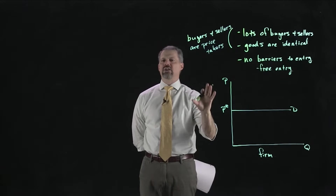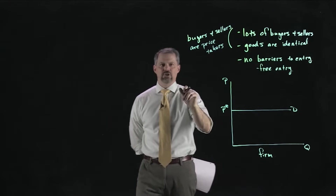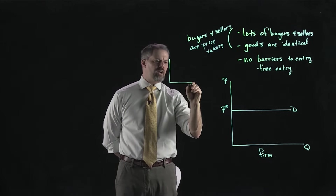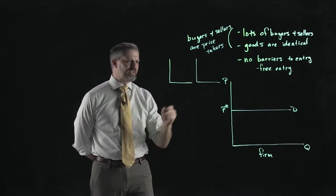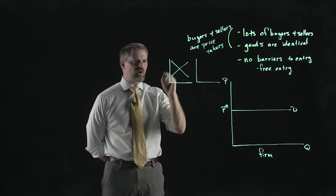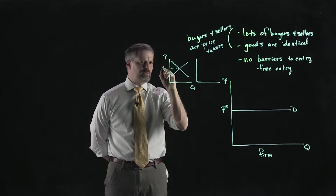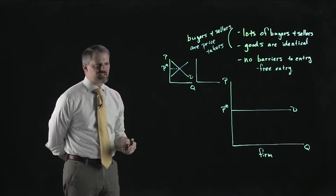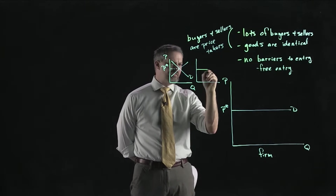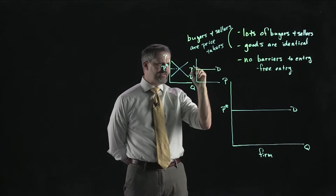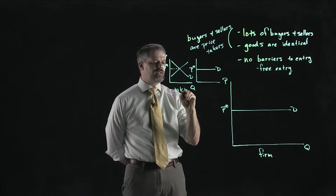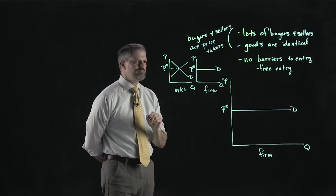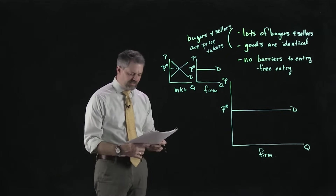We are not saying the market demand for this good is perfectly elastic. If we draw the market — with a market demand curve and market supply curve — the market demand curve is just downward sloping, not perfectly elastic. But what that results in is a demand curve that each firm faces that is perfectly elastic at the market price. So this is the market picture, and here would be the particular firm's picture, with a perfectly elastic demand curve.